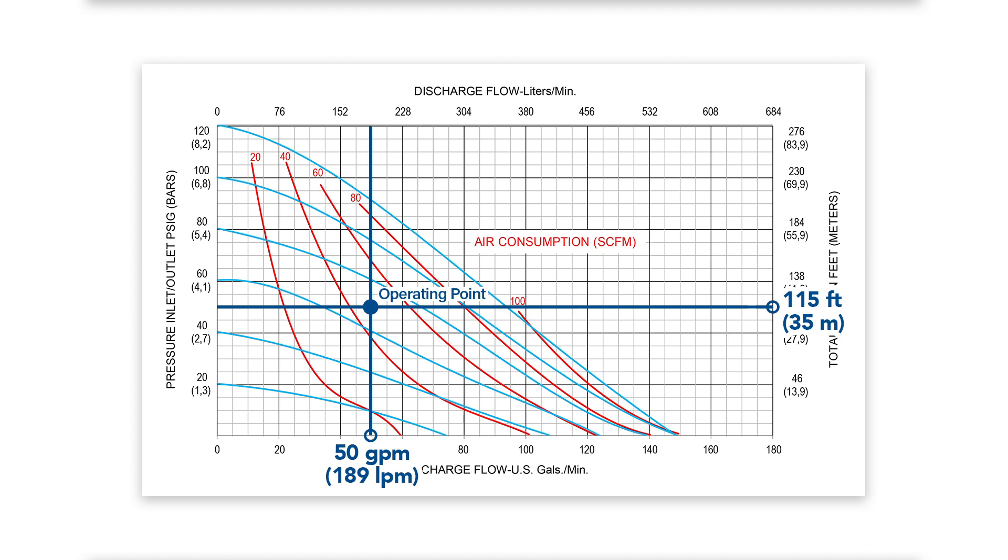From this operating point, the performance curve identifies the AODD pump's air consumption by following the red curve axis. In this example, by following the red curve axis, which lies between 40 and 60 SCFM, you can expect the AODD pump's air consumption to be about 48 SCFM.